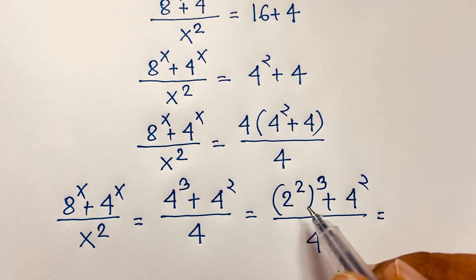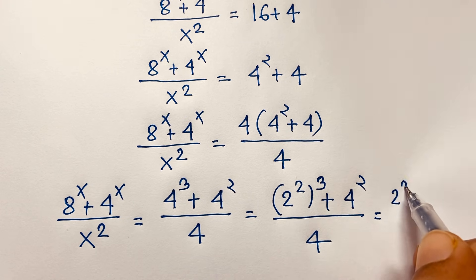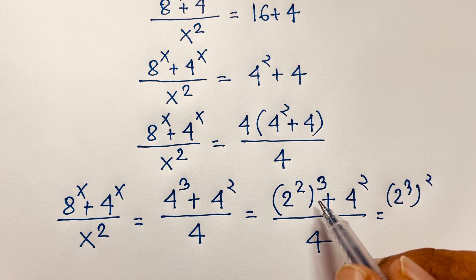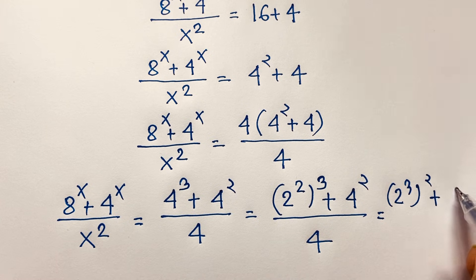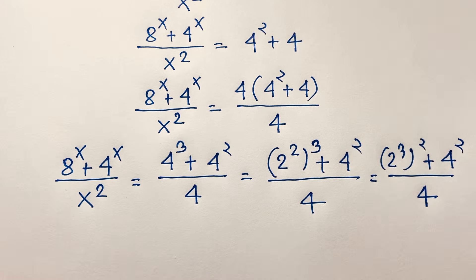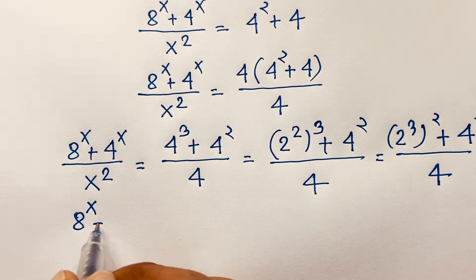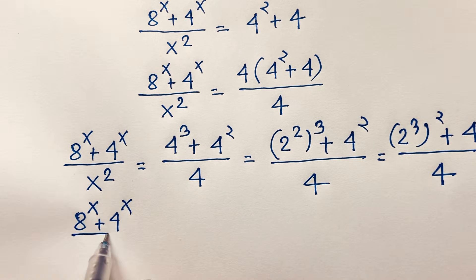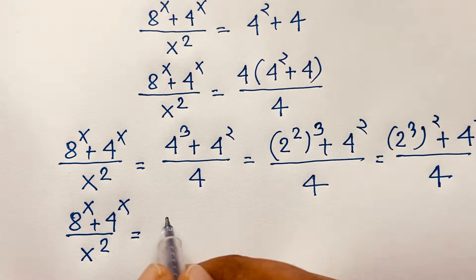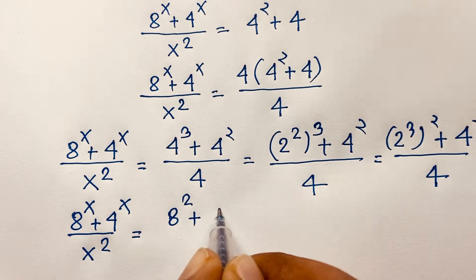Now I evaluate: 4 equals 2 squared, so 4^3 becomes (2^2)^3 equals 2^6, which is 8 squared — applying the exponential formula (a^n)^m. This gives the expression 8^x plus 4^x over x squared, where 2^3 equals 8 and we have 4^2 on the other side.